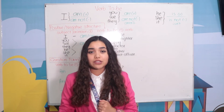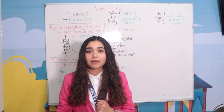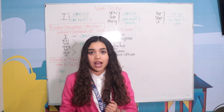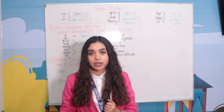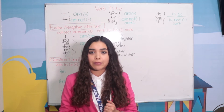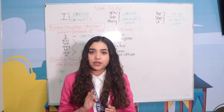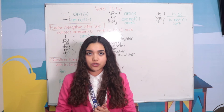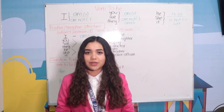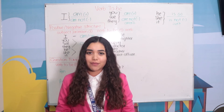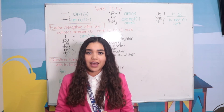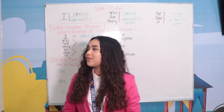We use verb to be to talk about a quality, a job, occupation, or even a nationality about a person. And we have three different structures for verb to be: negative and positive, and question form.